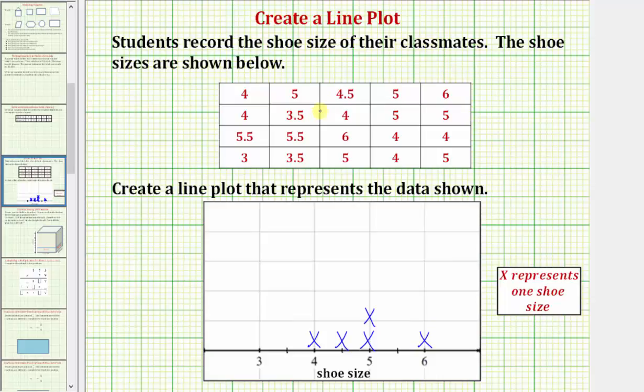Now we move to the second row. We have a shoe size of four, three point five, and then four. So for the shoe size of four, we have an x here. For three point five, or three and a half, or three and five tenths, we'd have an x here between three and four, and then a shoe size of four. So we have a third x here on the shoe size of four.